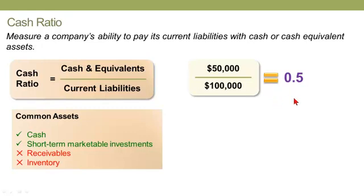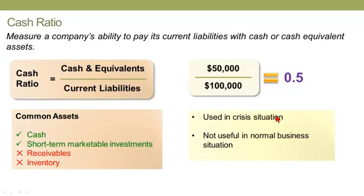Can we judge the cash ratio in isolation? No — as with most ratios, we want to compare it first against the company's own history and second against a good set of peers. The cash ratio would be used in a crisis situation, not in normal business circumstances. It's worth noting that short-term marketable investments are assumed to be convertible at fair market value, though even that is an assumption.